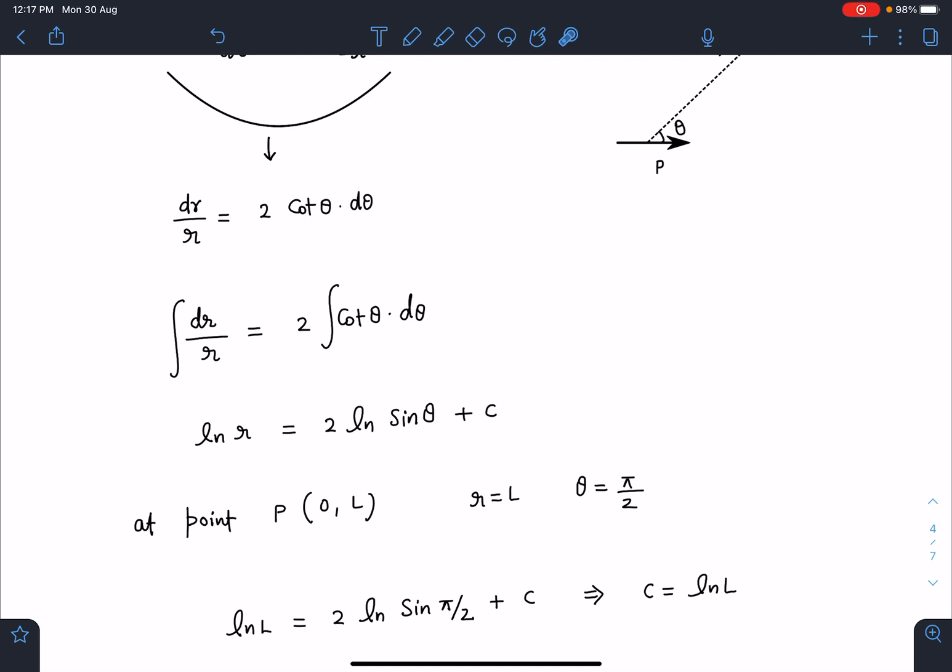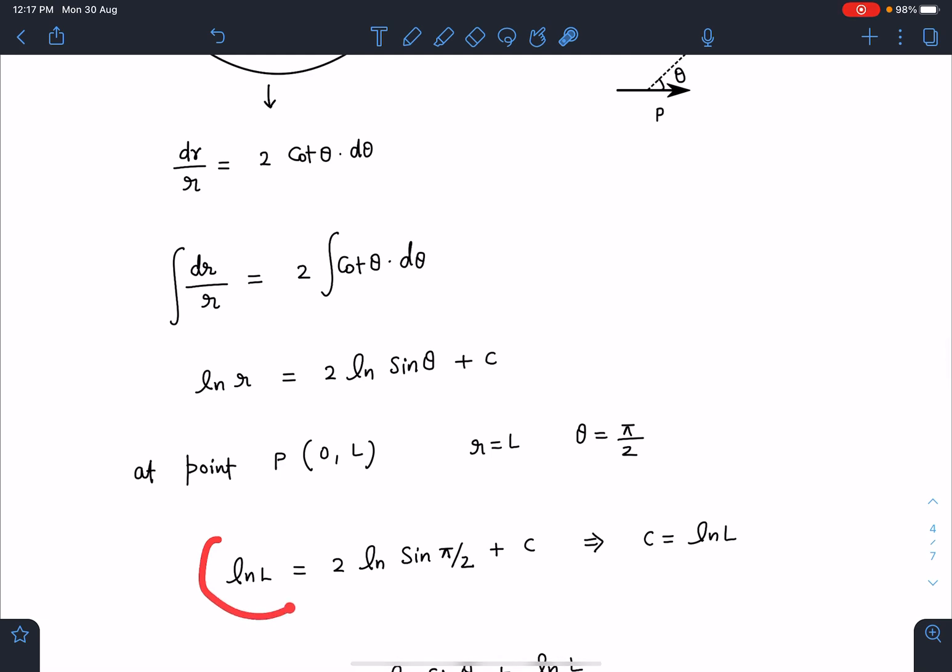This electric field line is passing through point P which is (0, L). For (0, L), the distance from the origin is r = L in polar coordinate system, and θ for the y-axis becomes π/2. In this equation we substitute: ln L = ln sin(π/2) + C. Simplifying, ln 1 becomes 0, so C = ln L.